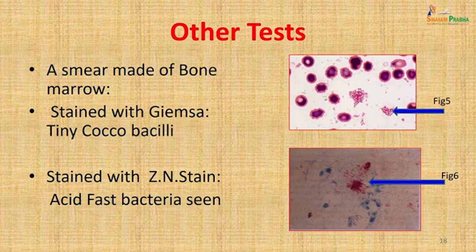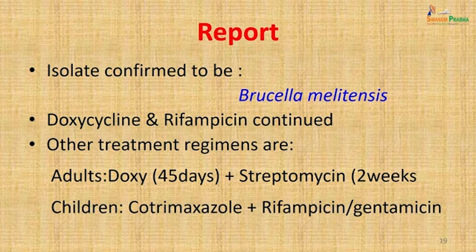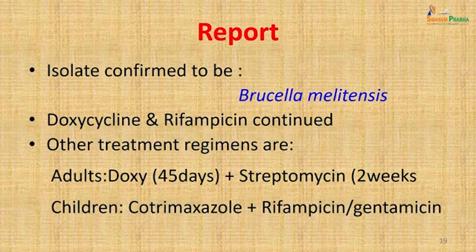The isolate was confirmed to be Brucella melitensis. The patient was continued on doxycycline and rifampicin. Alternative treatment regimens that could have been used include doxycycline with streptomycin, or cotrimoxazole with rifampicin or gentamicin. The patient responded well to doxycycline and rifampicin, which were continued.